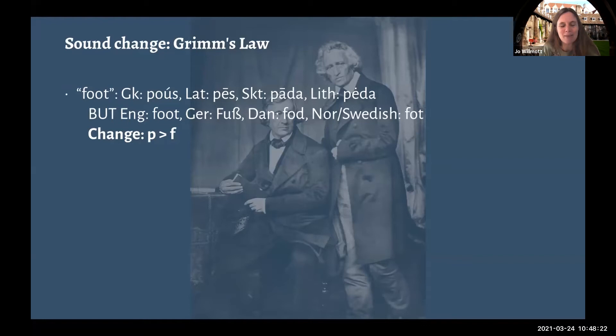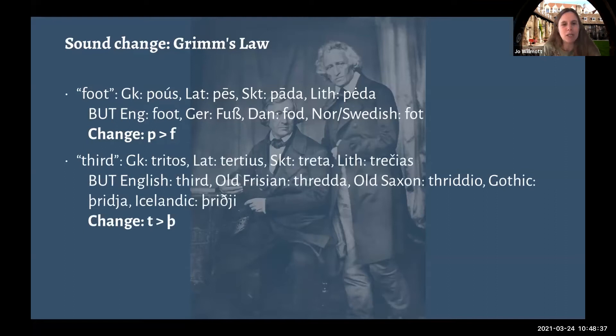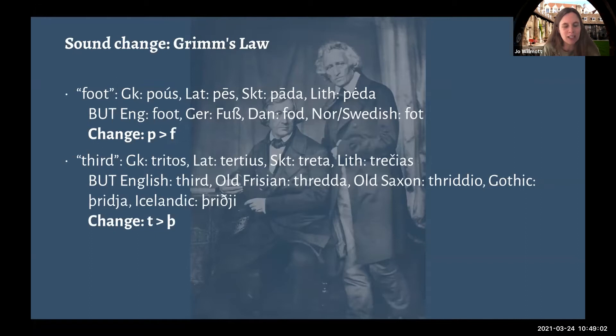The general rule is that in the Germanic languages there is a change from P to F. What was particularly interesting for the Brothers Grimm was that it wasn't just an isolated change. The English word 'third' seems related to Greek tritos, Latin tertius, Sanskrit trita, Lithuanian trecsias — but English had 'third,' mirrored in other Germanic languages: Old Frisian thrida, Old Saxon thriddja, Gothic þridja, and Icelandic þriðji. So there we have a change of T to Þ (th).